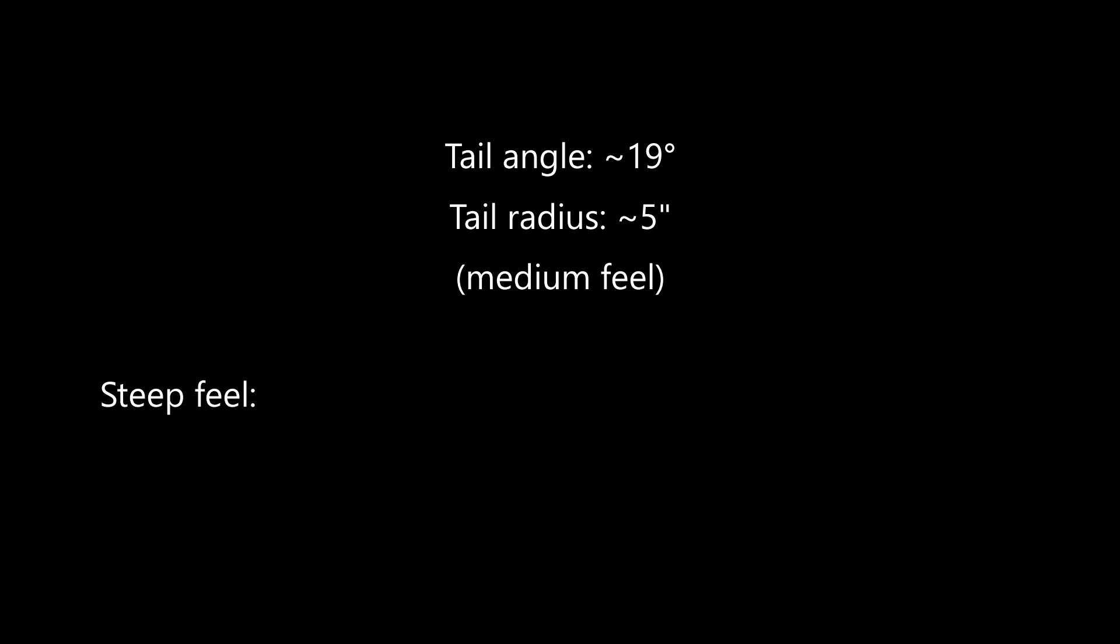Steep boards generally have kick tails around 20 degrees and higher with a kick radius of 4 inches or lower. Mellow boards generally have kick tails 18 degrees and lower with a kick radius of 6 inches or higher.